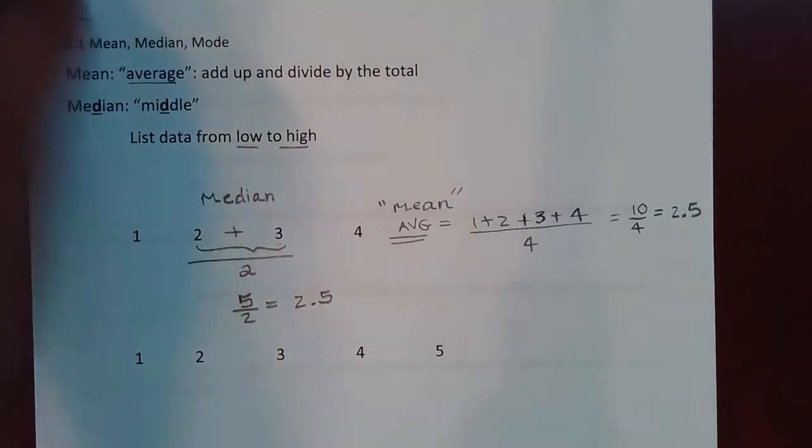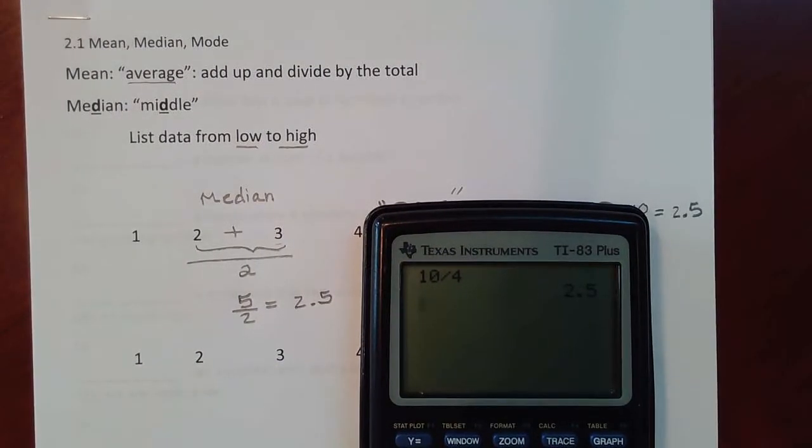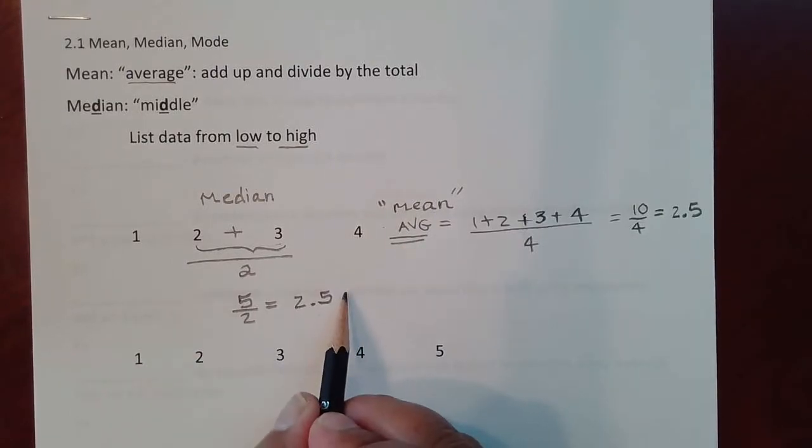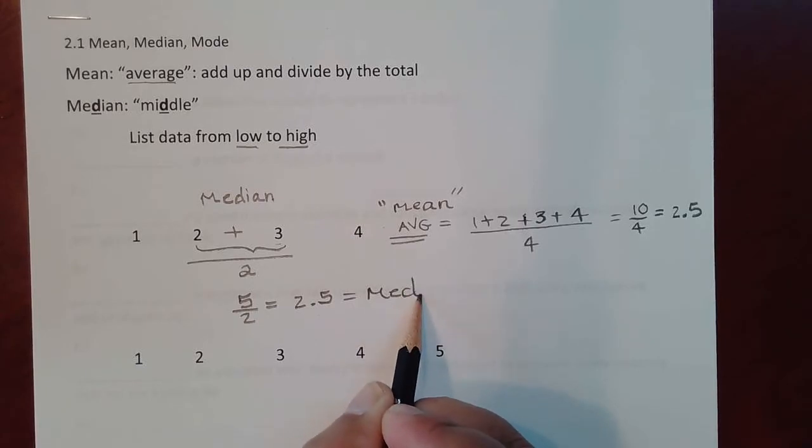And again, you can put that in your calculator in order to convert it into decimal form like you did in chapter one. So 2.5. So we got for the average 2.5 and we also got for the median 2.5.